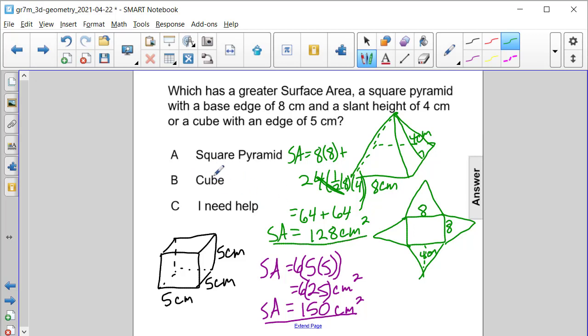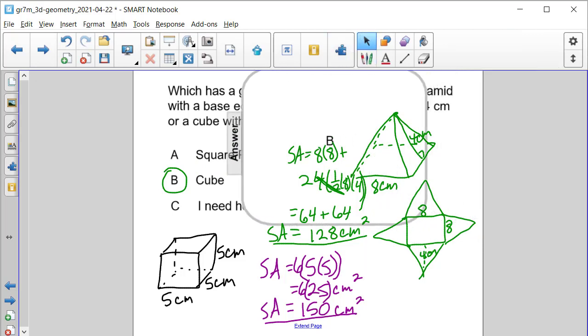So clearly, the cube has the greater surface area of 150 square centimeters.